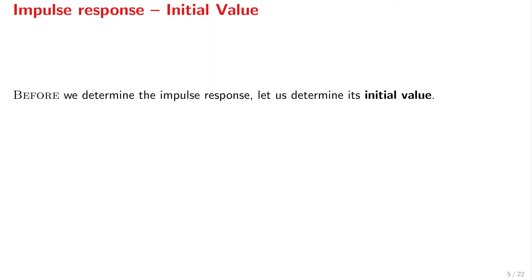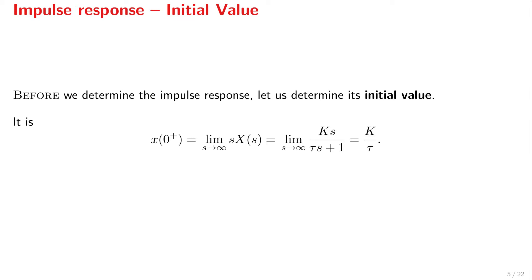Now let's look at the initial value of the system response. We apply the initial value theorem to find x at 0-plus, which equals the limit as s goes to infinity of s times X(s). This is the limit of Ks over tau s plus 1, and it is easy to see that this equals K over tau. This is a finite number, so we accept it. If this limit were infinite, we should not accept it — the initial value theorem can only be used so long as the result of the limit is finite.